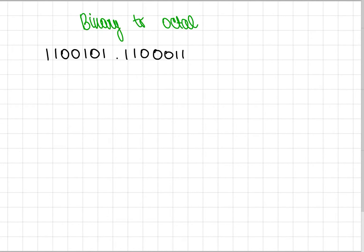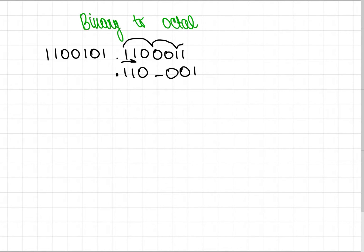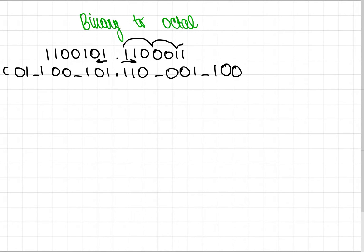What you have to do in octal is write out digits in groups of three. So let's start from numbers that go after the decimal point, from left to right. So 1, 1, 0, 0, 0, 1. We have just one left but we add two zeros to make a complete group, and then from right to left we go 1, 0, 1, 0, 0, 1, 1, and we just add two zeros.